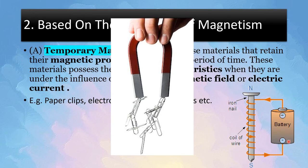Let's look at the electromagnet. If we cut off the electricity, then this iron nail will also lose its property of magnetism. Hence, it is also a type of temporary magnet.